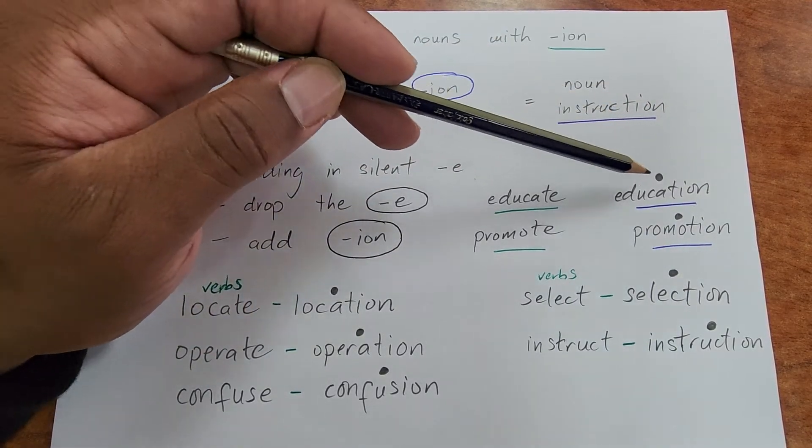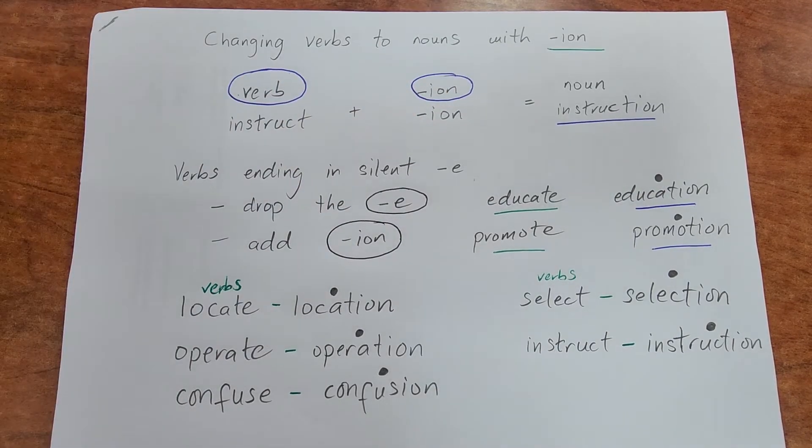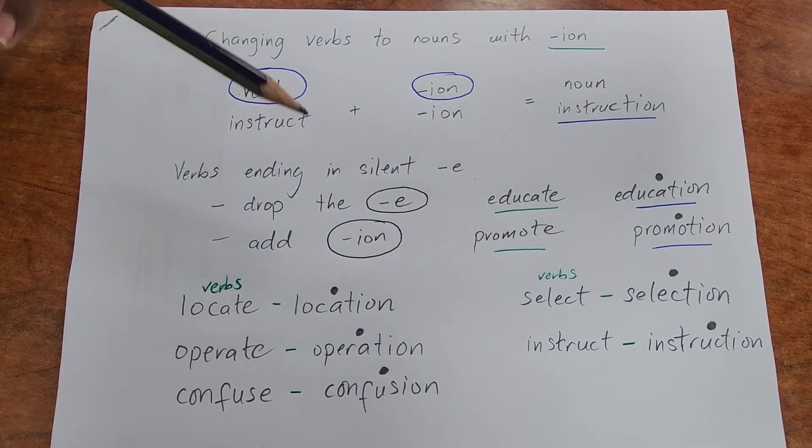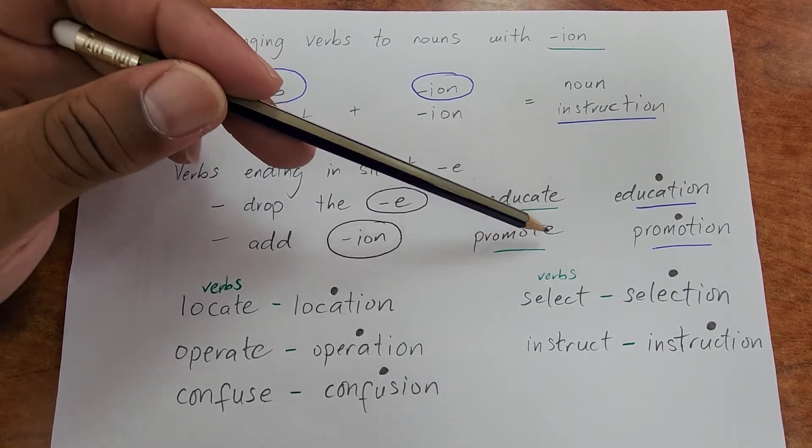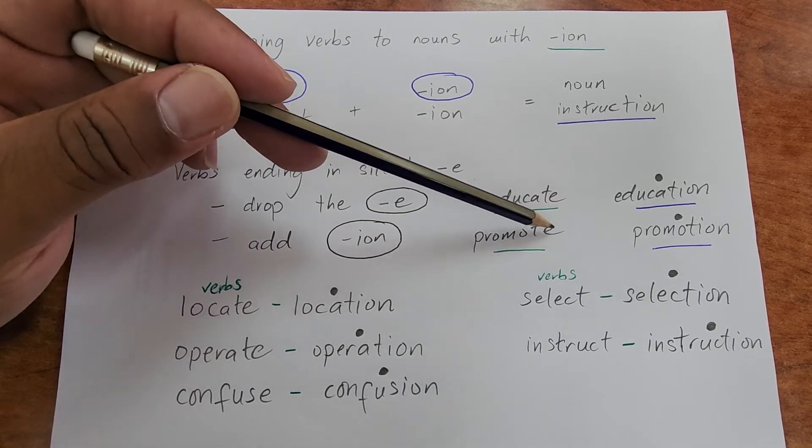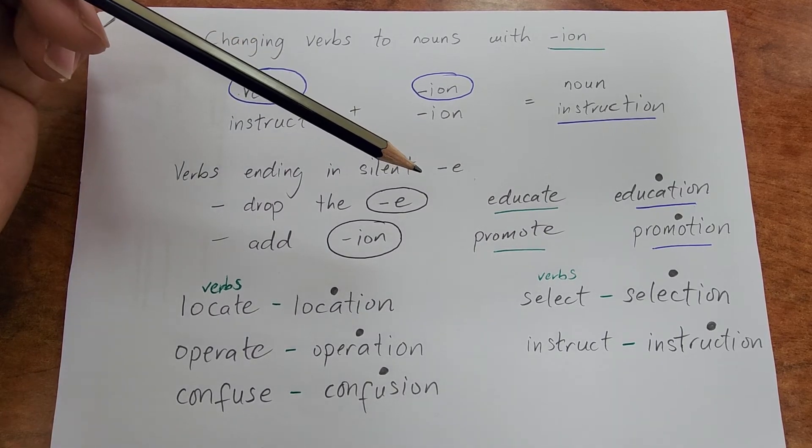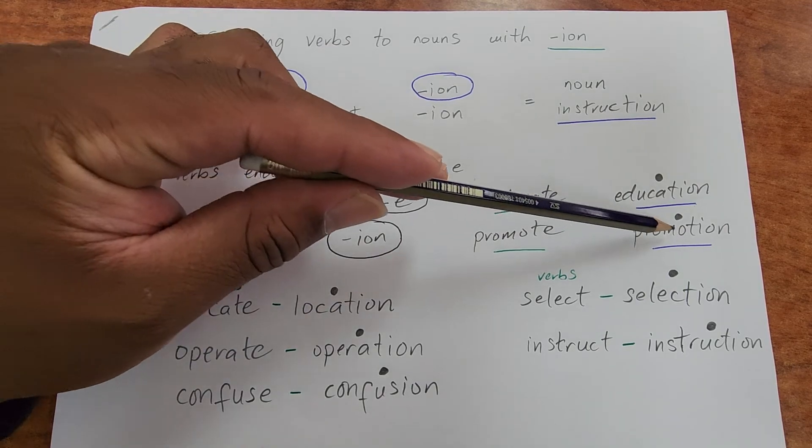Now let's go to another word. Promote is ending with a silent e. In order to make a noun, we're going to say promotion. Promotion, stress the second syllable, the syllable which is before the suffix.